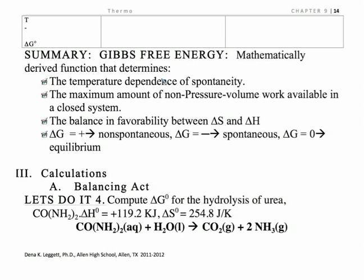So, here's the summary of this. Mathematically, it's a mathematically-derived function, Gibbs free energy is. Helps us with the temperature dependence of spontaneity. It's the maximum amount of non-pressure volume work. In other words, we're not using this to study situations where we have compression and expansion of gases. It's a balance of favorability between our entropy and our enthalpy. When it's positive, it's non-spontaneous. When it's negative, it's spontaneous. Now, we're going to look at delta G. Notice right here, I don't have the not there. Here, when delta G at non-standard situations becomes zero, that's equilibrium.